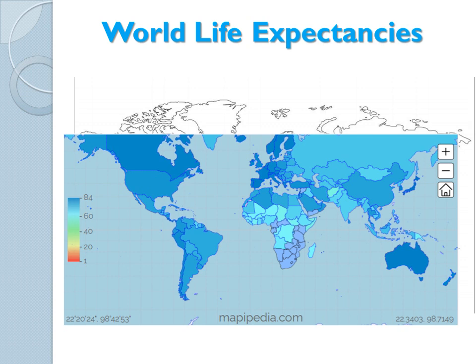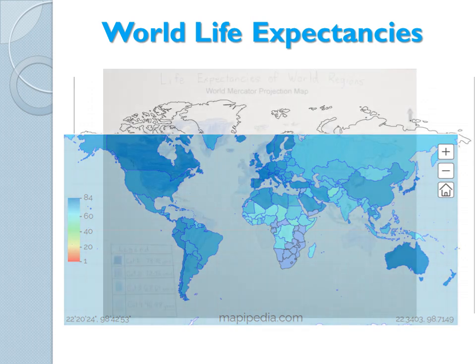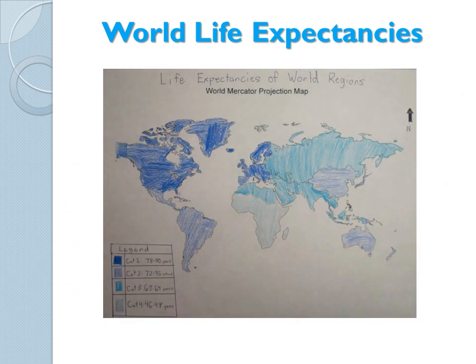And don't worry if your map doesn't look this detailed or clean. Here's an example of what one of your maps may look like. We don't have a way to add an accurate scale to this map, but we can still give it a proper title, north arrow, and a legend explaining to the reader how this map should be interpreted. You will now use the map you've created to answer the map reading activity quiz questions that go with this exercise. Thanks for watching, and we'll see you next time!